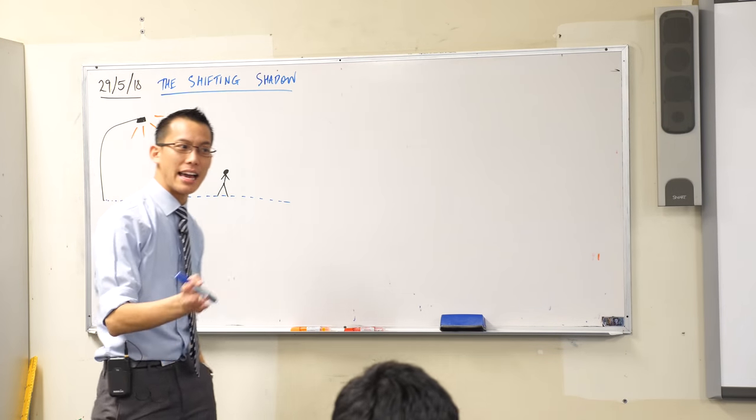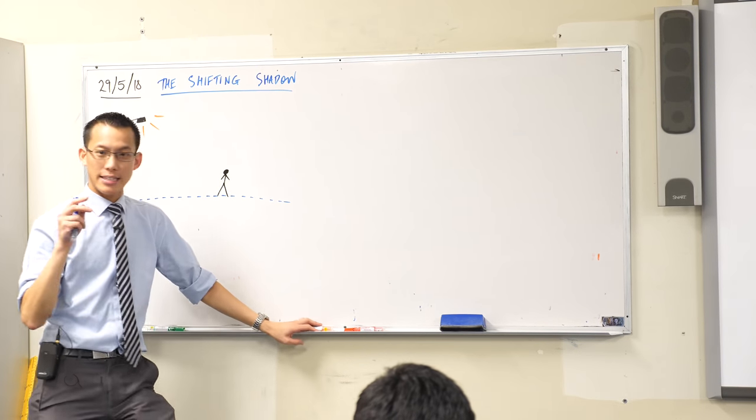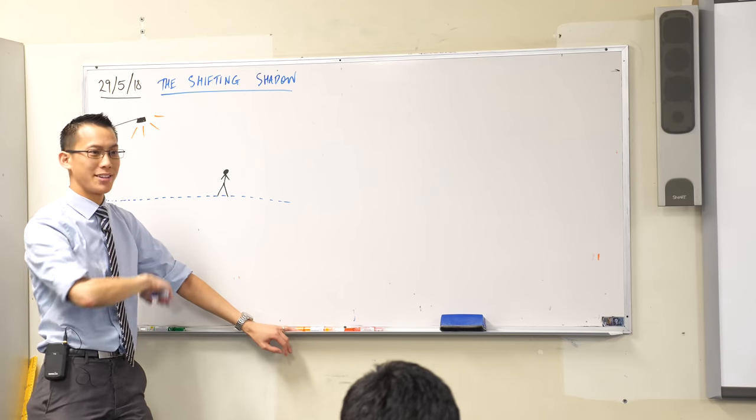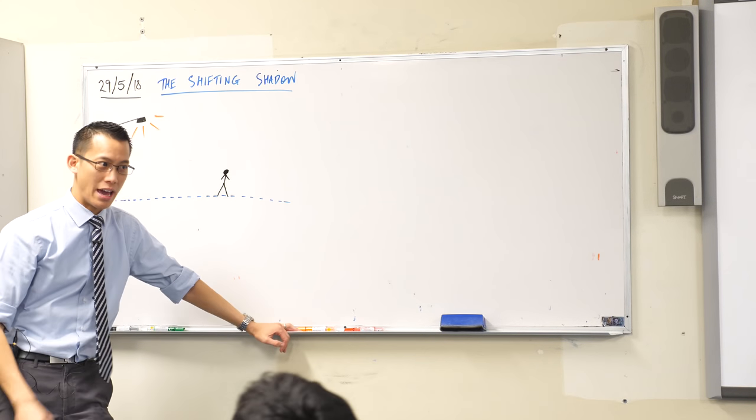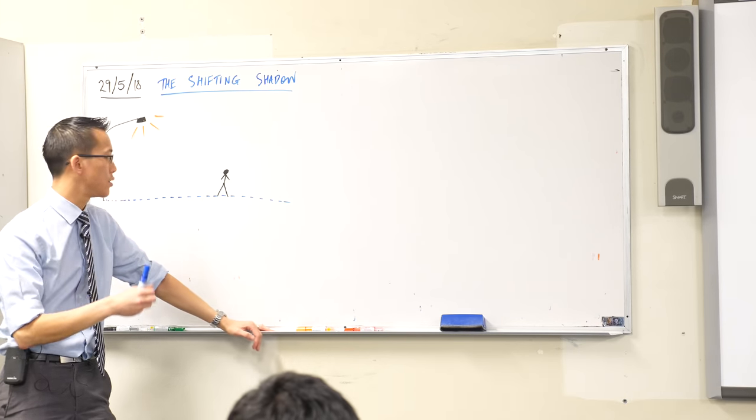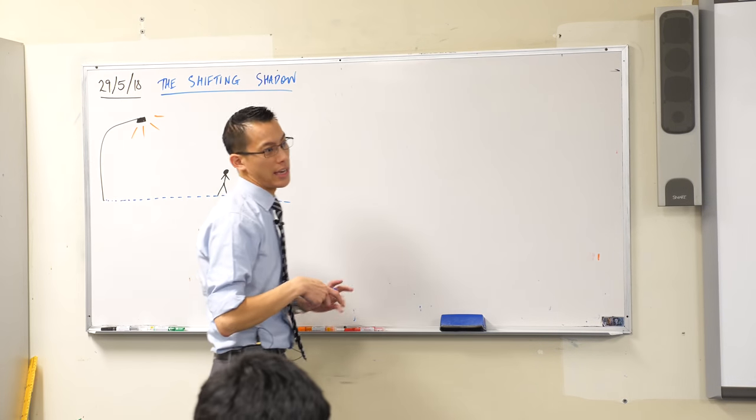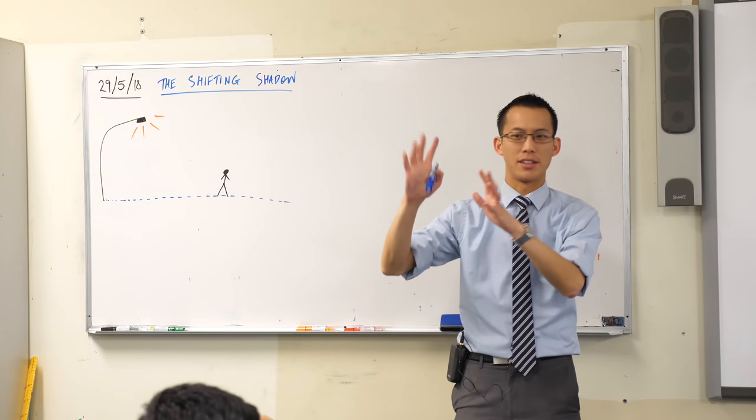This question, again like the slipping ladder, it's a classic question that's why I've given it a title. The Shifting Shadow, and it's really important and again it's a bit counterintuitive so that's why we should really think carefully about it. It's kind of like a seminal example.